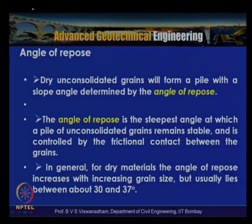In general, for dry materials the angle of repose increases with increasing grain size, but usually lies between about 30 to 37 degrees. For example, a sand classified as SP (uniformly graded sand) with an average particle size of about 0.15 to 0.2 mm exhibits an angle of repose of about 28 to 29 degrees in the dry state. In general, the sand cannot stand vertical or steeper than this angle of repose.